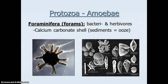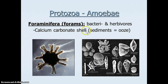The next couple types are both different forms of amoeba. Foraminifera — or forams — can be both herbivores and consumers of bacteria. They are active predators and make calcium carbonate shells, much like the phytoplankton coccolithophores. That's important for sedimentation and the formation of what we call ooze — the biogenic sediments made mostly of organism shells. So along with coccoliths, forams can produce calcium carbonate sediments.